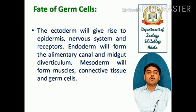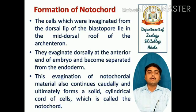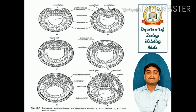In future, the formation of notochord will take place. The cells invaginated from the dorsal lip of the blastopore lie in the middorsal of the archenteron. They invaginate dorsally at the anterior end of the embryo and become separated from the endoderm. This evagination of notochordal material continues caudally and ultimately forms a solid cylindrical cord of cells called the notochord, which lies below the neural tube and between the mesodermal somites. It extends the entire length of the body, and a notochordal sheath of fibrous connective tissue will eventually surround it.